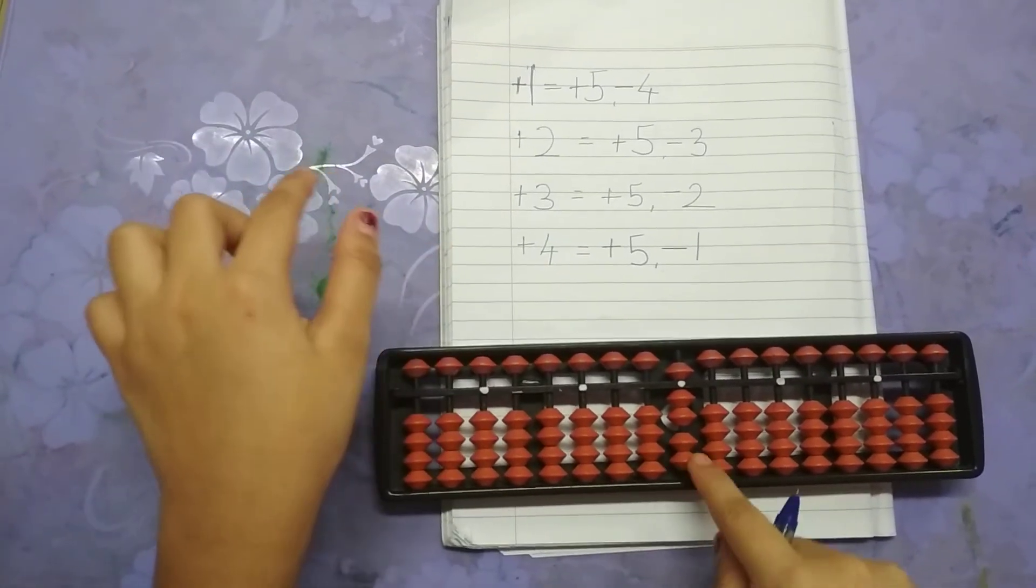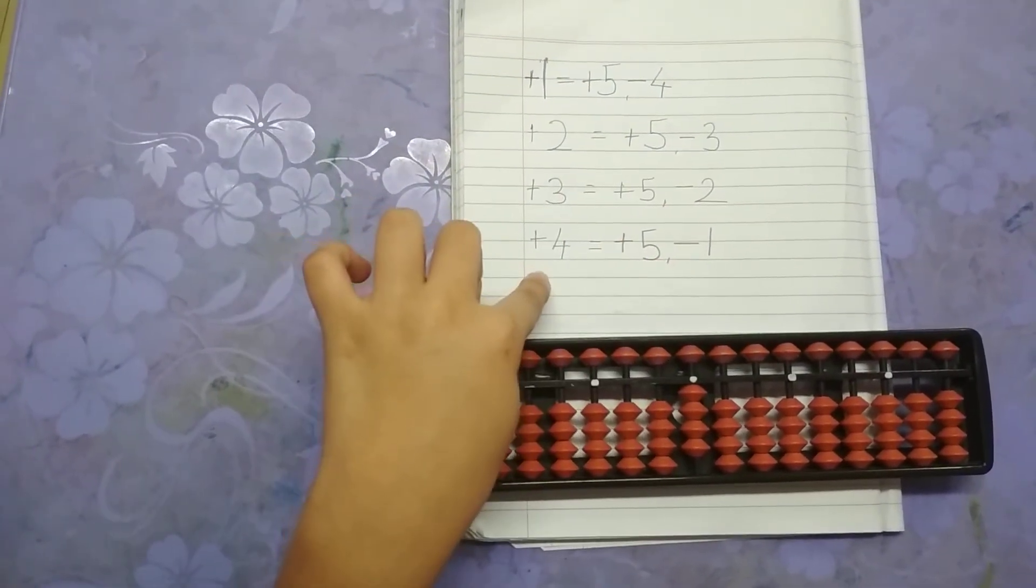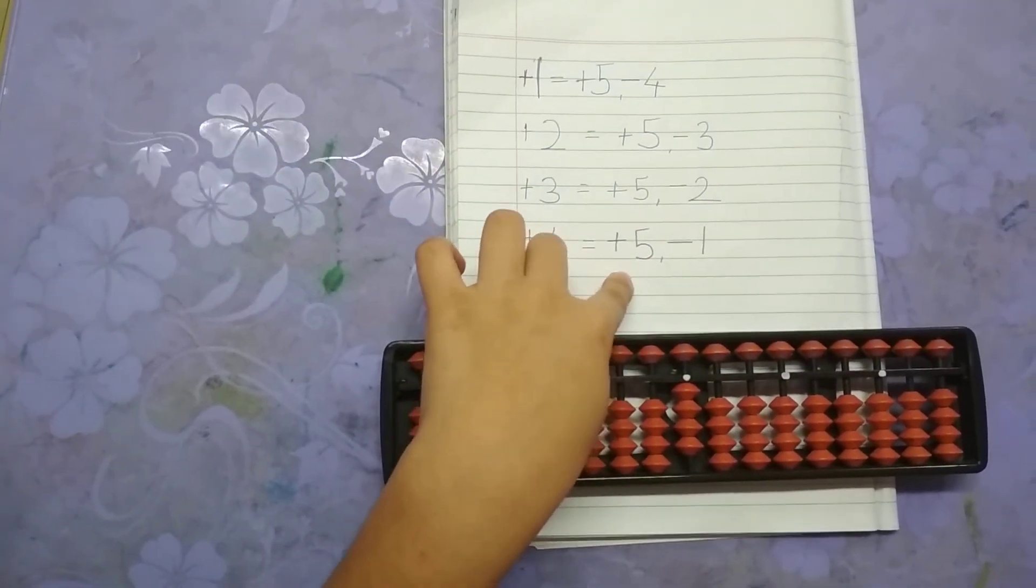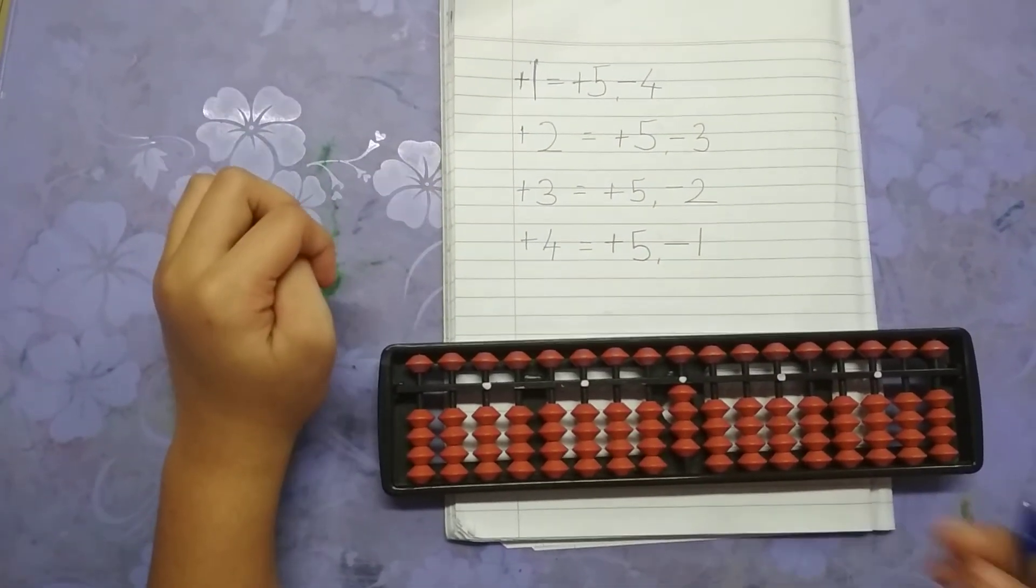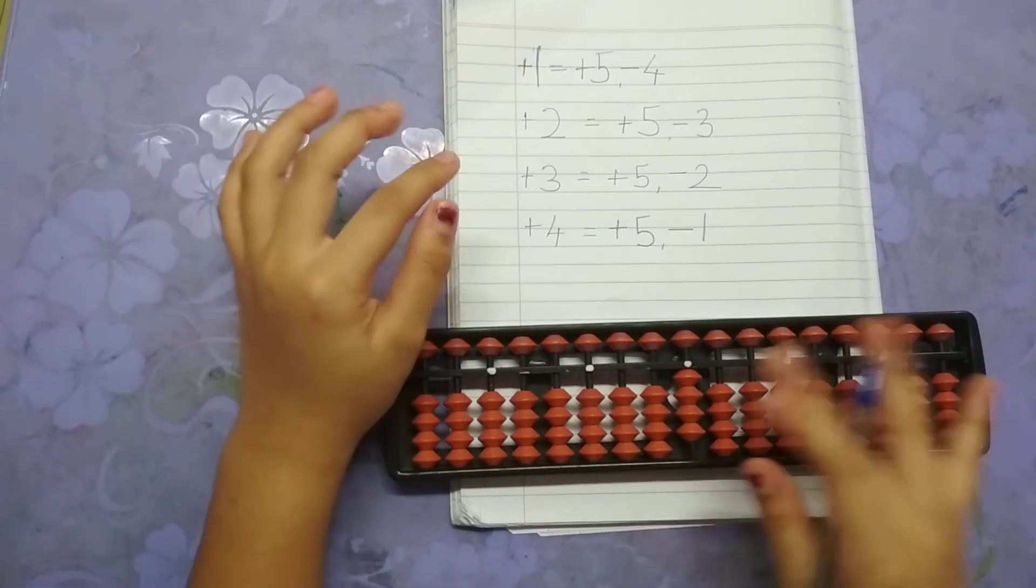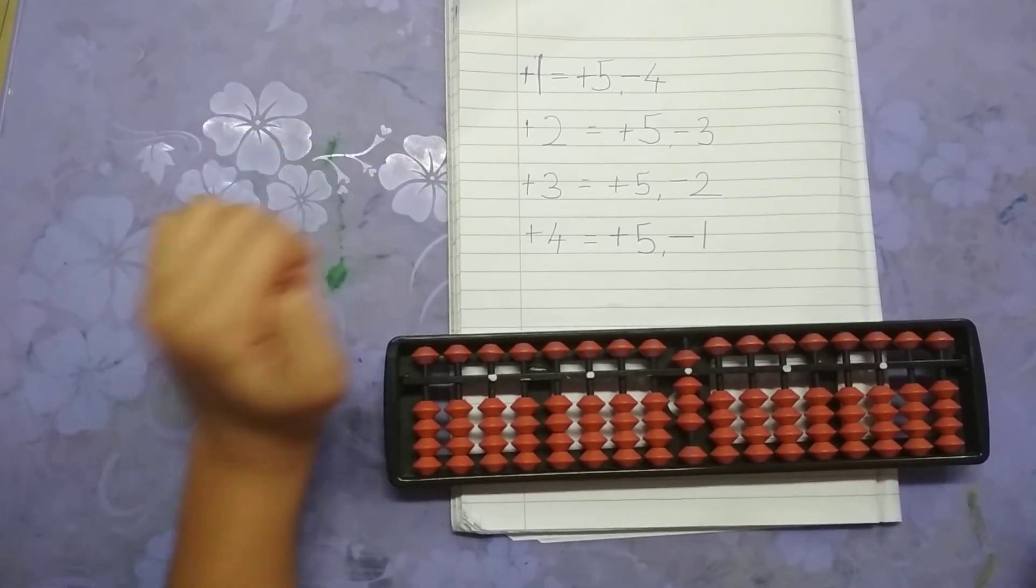Now if I have to add 4. The formula for 4 is plus 5 minus 1. So 4 plus 4 equals 8. We need it to be 8. Plus 5 and minus 2, which equals 8.